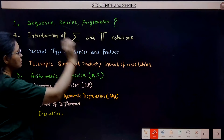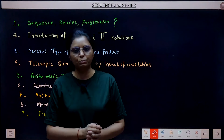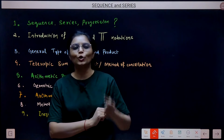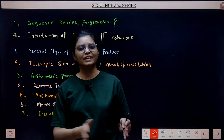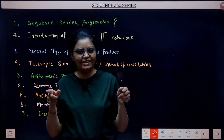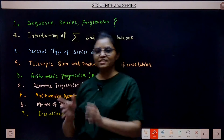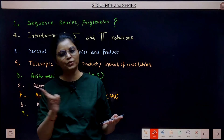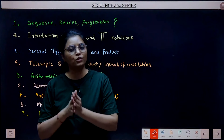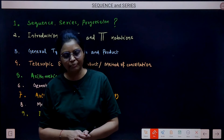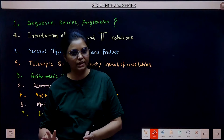Before starting, let us understand the meaning of sequence, series and progression. Sequence means order — when terms come in order, we know who is at first position, second position, third position. Series means sum of a sequence — when we add up all terms of a sequence, that becomes a series. Progression is a particular sequence in which terms follow a mathematical pattern. In our syllabus, AP, GP and AGP are included; HP has been removed.